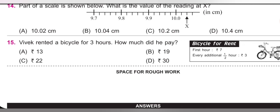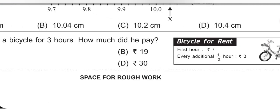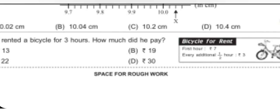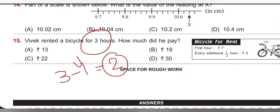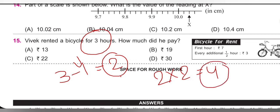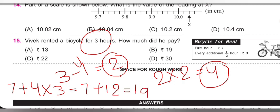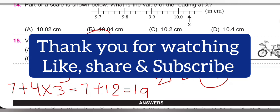Last question: Vivek rented a bicycle for 3 hours. Rent for first hour = ₹7; every additional half hour = ₹3. Remaining time after first hour = 2 hours = 4 half-hours. Cost = 7 + (4 × 3) = 7 + 12 = ₹19. Option B is correct. Thank you so much — if you have any doubts, please write in the comment section.